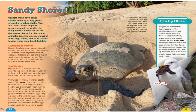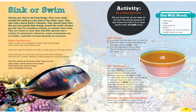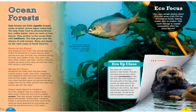The sand hides the eggs from predators while nutrients from the eggs nourish plants that grow on the beach. Ocean forests: kelp forests are thick aquatic forests made of giant brown algae called kelp. Kelp make food by photosynthesis but have no roots or true leaves — they anchor to the ocean floor with holdfasts. Kelp grow near the shores of cold oceans; many are found on the west coast of North America. Kelp forests are full of life, providing food and shelter for thousands of marine species.